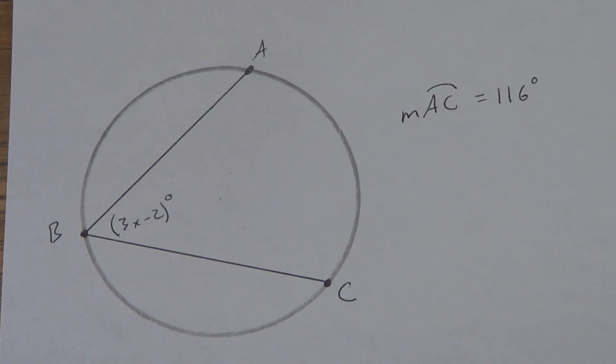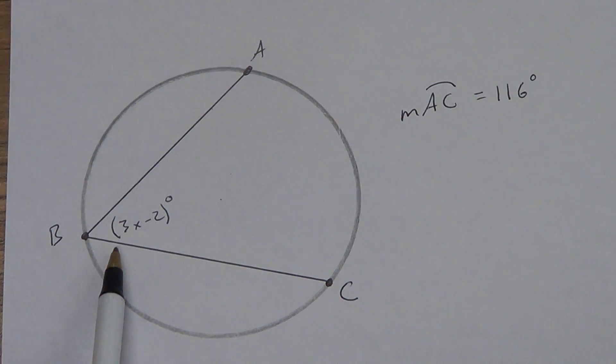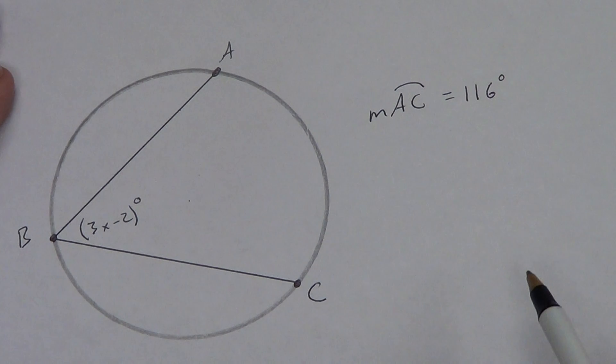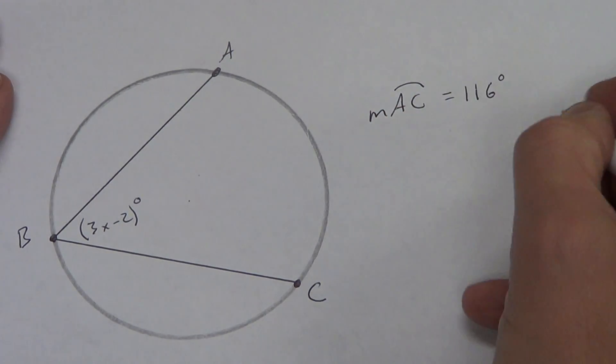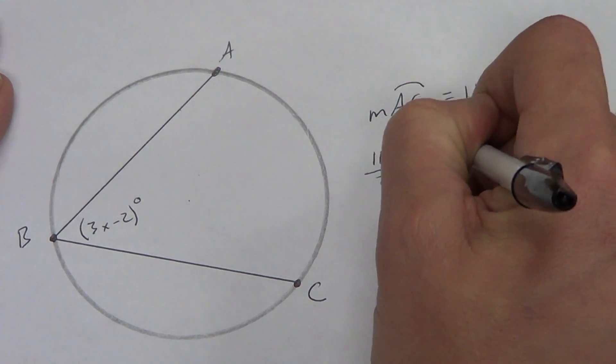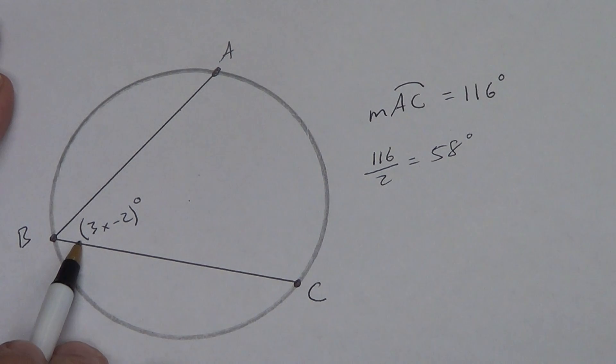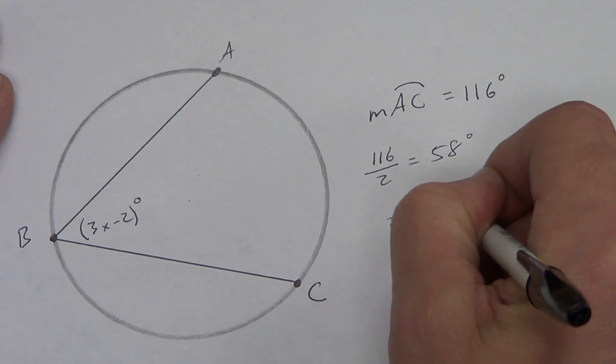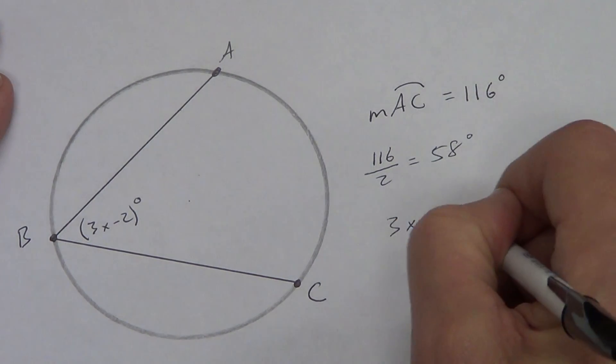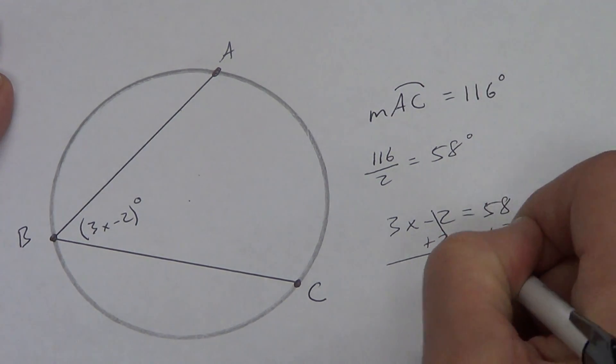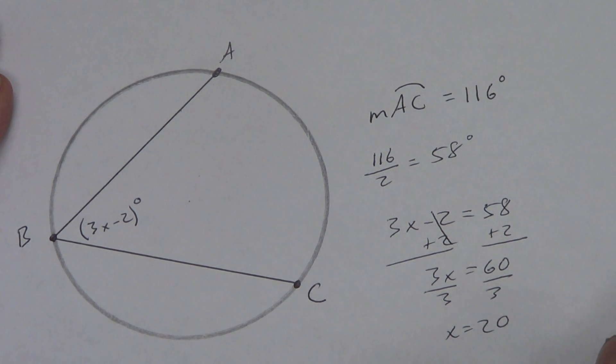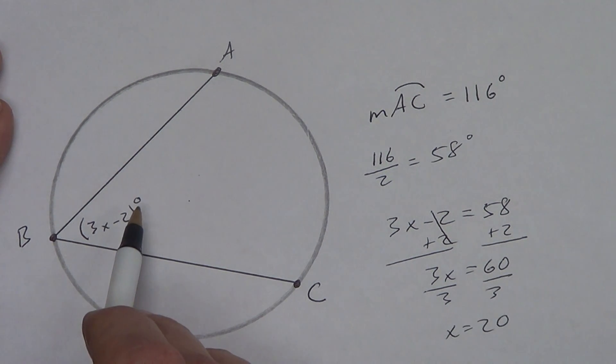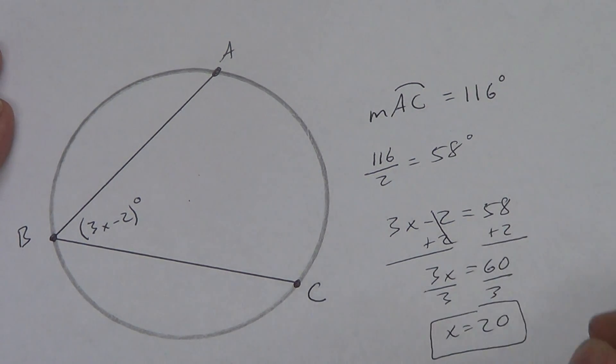I got five examples of doing some algebra using these concepts. First one: 3x minus 2 is our angle, arc AC is 116 degrees. The angle is half of the arc, so I'm going to take 116 divided by 2 and get 58 degrees. Since the arc is 116, the angle must be 58. It turns into a pretty easy algebra problem: 3x minus 2 equals 58. Add 2 to both sides, 3x equals 60, divide by 3, x equals 20. I do not need to put a label on this, it is not units, not a length. My answer is x equals 20.